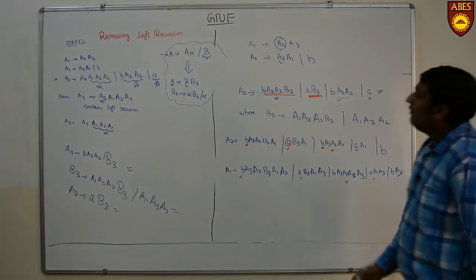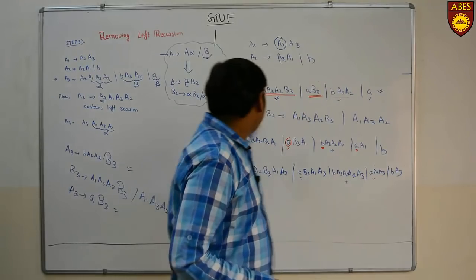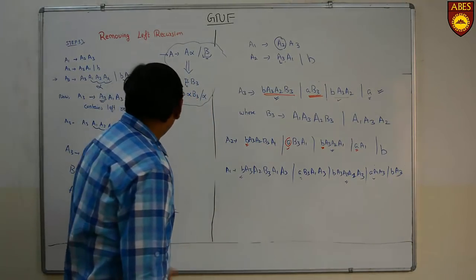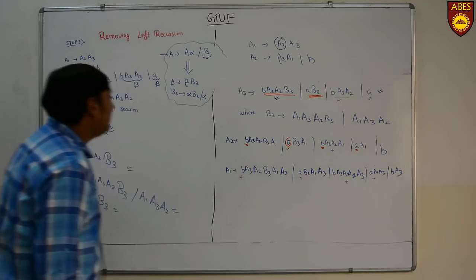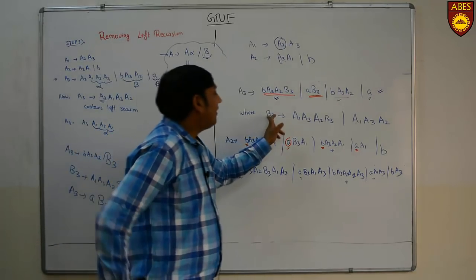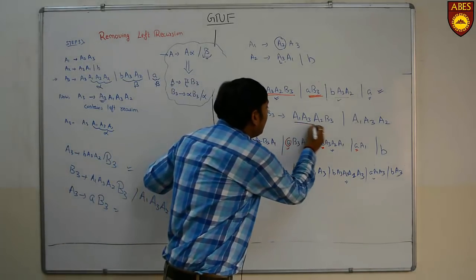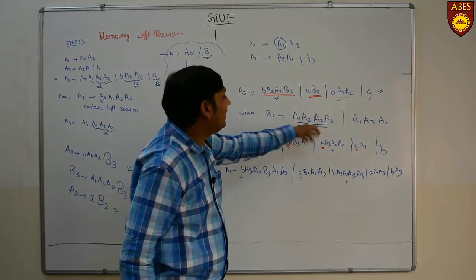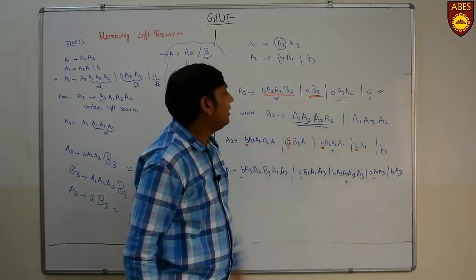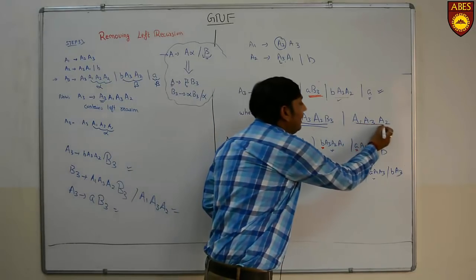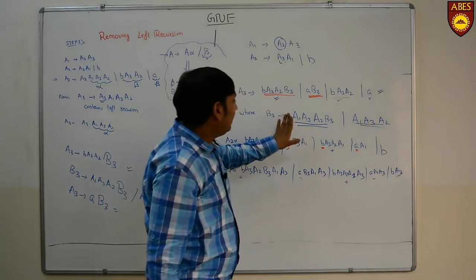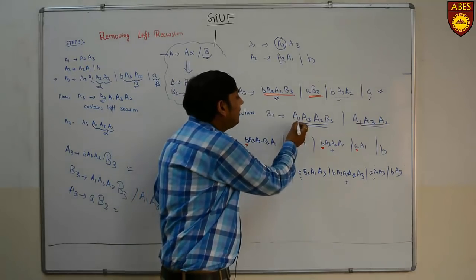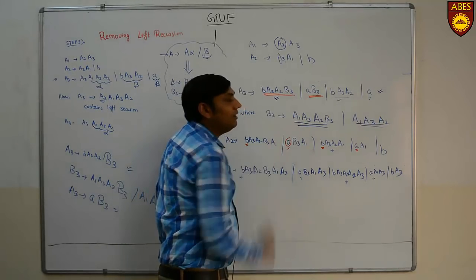Now we have converted A3, A2, A1 into GNF. What is left is B3. B3 tends to form A1 A3 A2 B3 and A1 A3 A2. This is not in GNF form because it is starting with variable A1.